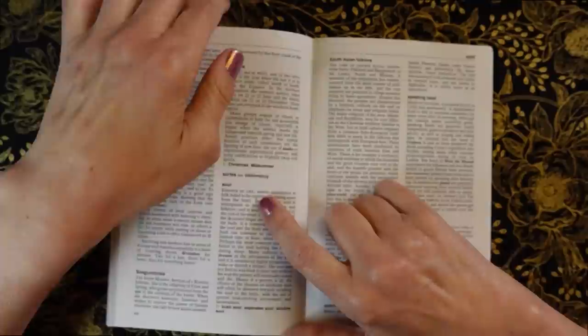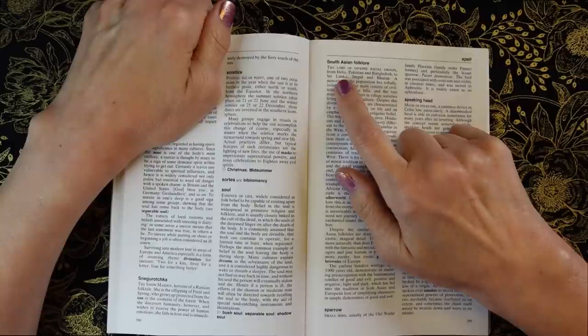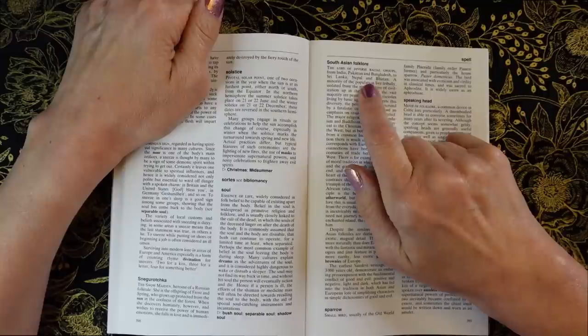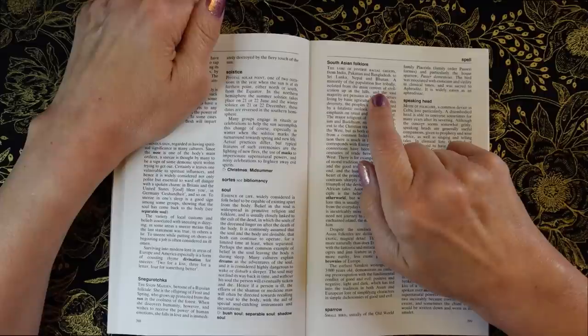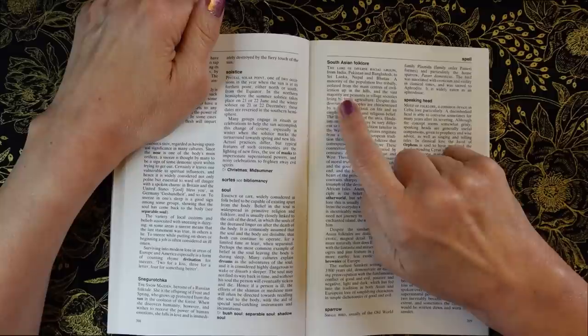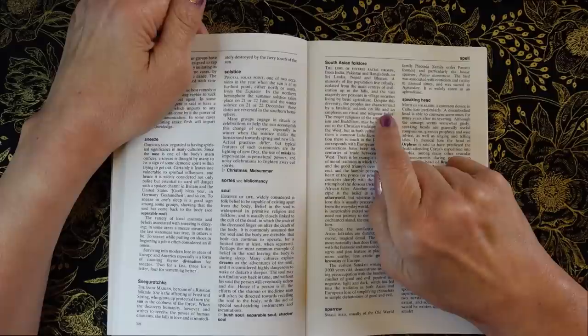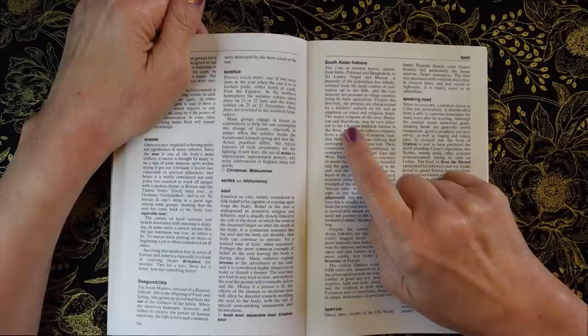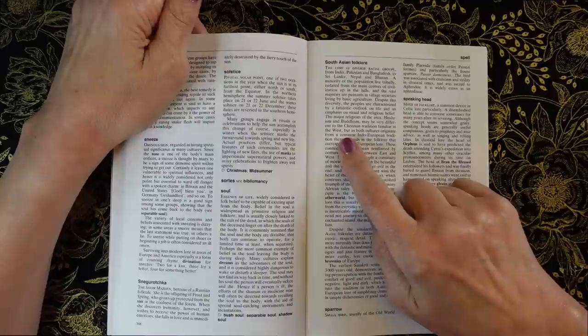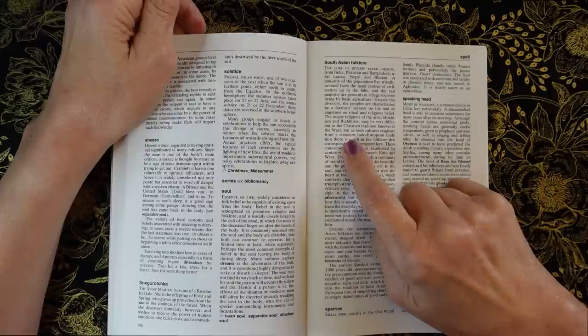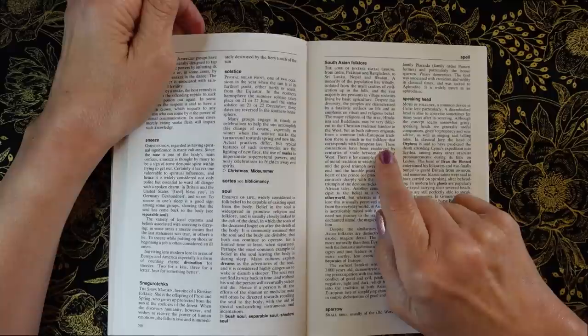South Asian folklore. The lore of diverse racial groups, from India, Pakistan, and Bangladesh, to Sri Lanka, Nepal, and Bhutan. A minority of the population live tribally isolated from the main centers of civilization up in the hills, and the vast majority are peasants in village societies living by basic agriculture. Despite this diversity, the peoples are characterized by a fatalistic outlook on life and an emphasis on ritual and religious belief. The major religions of the area, Hinduism and Buddhism, may be very different to the Christian tradition familiar in the West.